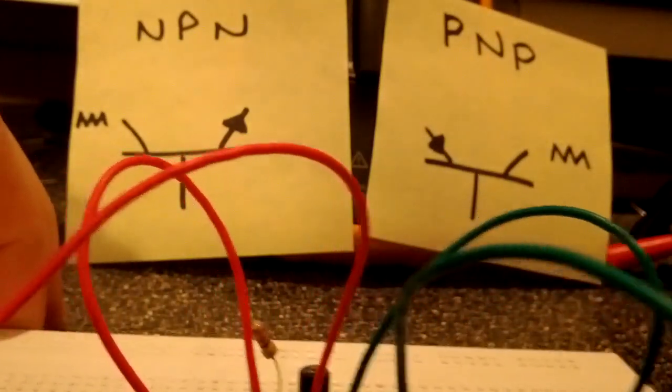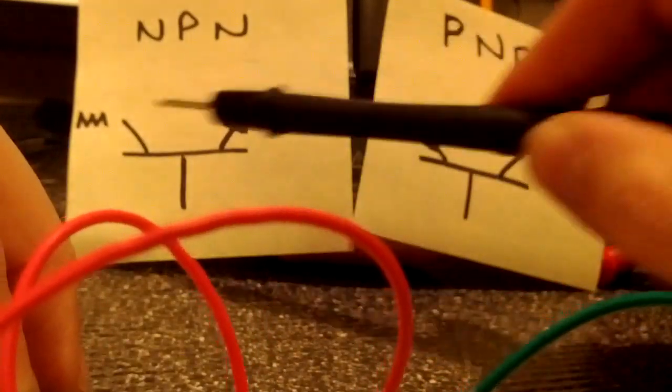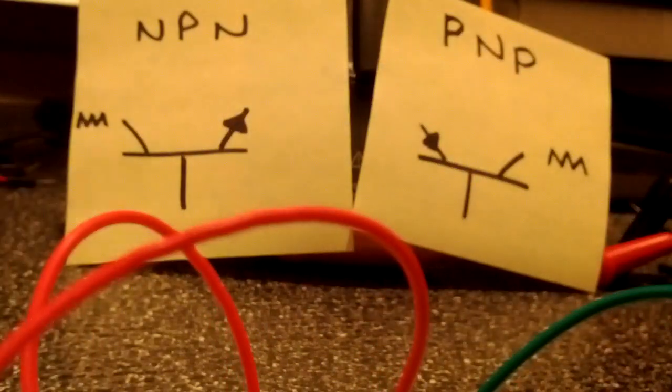If we go back to the NPN, you'd see that it's a current flow from here to here which allows current to flow from here to here. So they're very similar.